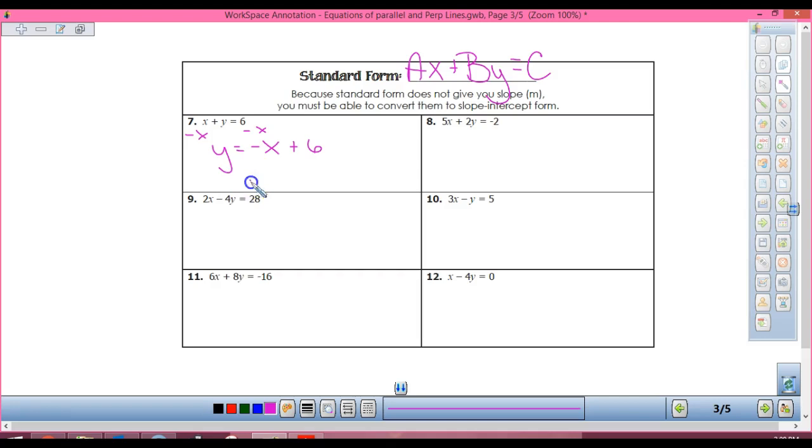So in number seven, what do I have to do to get y by itself? Subtract x, so I have y equals negative x. What's my slope of this? Negative one.